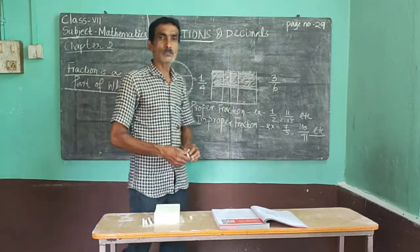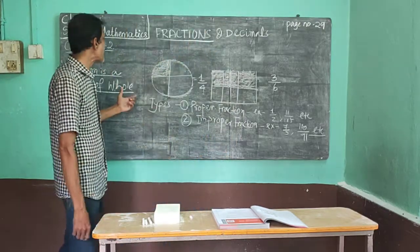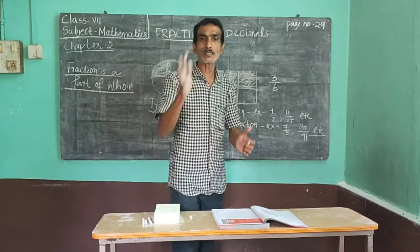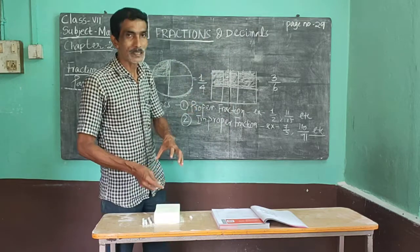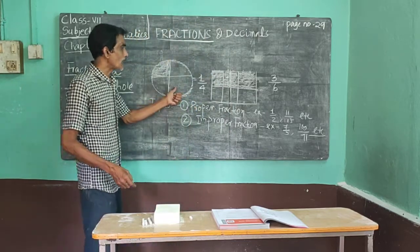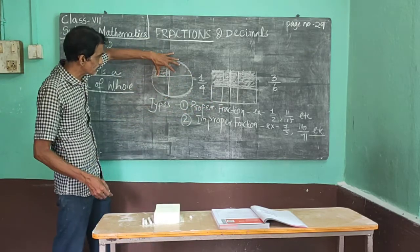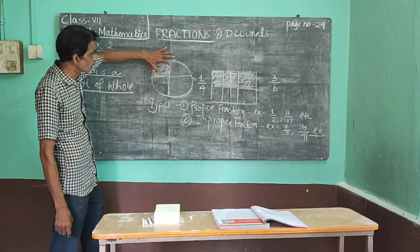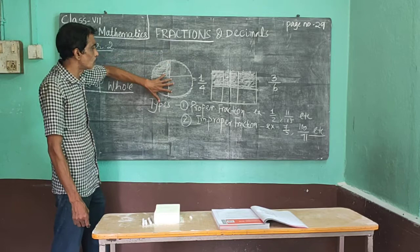As we all know from previous classes, the fraction is a part of a whole — that means if I make a whole thing in equal parts and pick any one part, that is the fraction. Look at the blackboard: I draw two pictures here. I made a circle divided into four equal parts, and one part equals one-fourth. That means this is a part of a whole.